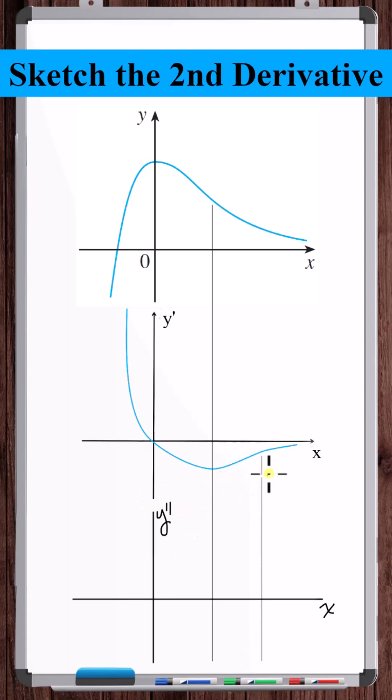As x approaches negative infinity, the slope of y prime approaches negative infinity, and the concavity of the function graph approaches negative infinity.